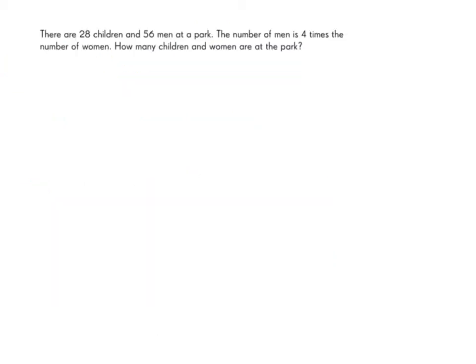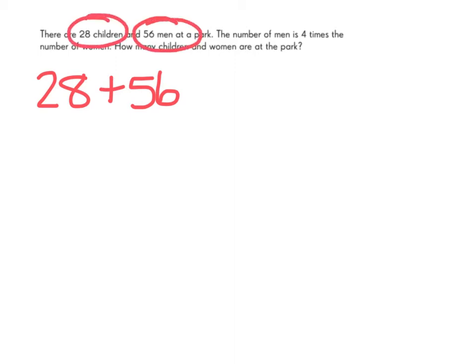Let's look at another word problem to help us build an expression that we can simplify. There are 28 children and 56 men at a park. The number of men is 4 times the number of women. In order to calculate the number of women at the park, we'll have to divide the number of men, which is 56, by 4. Here is our numeric expression that will help us solve how many children and women are at the park.